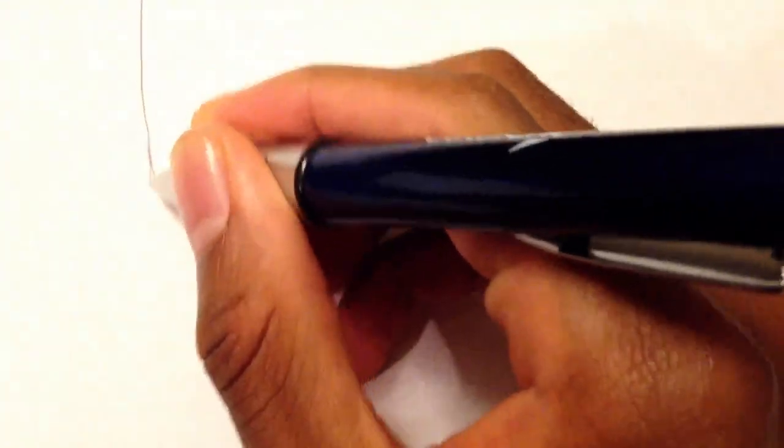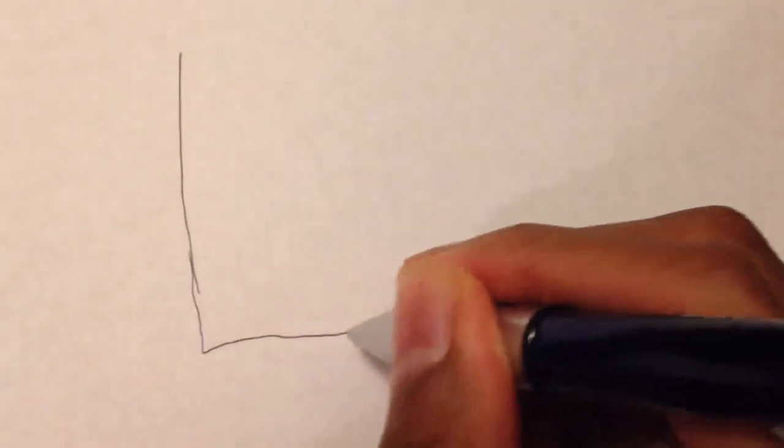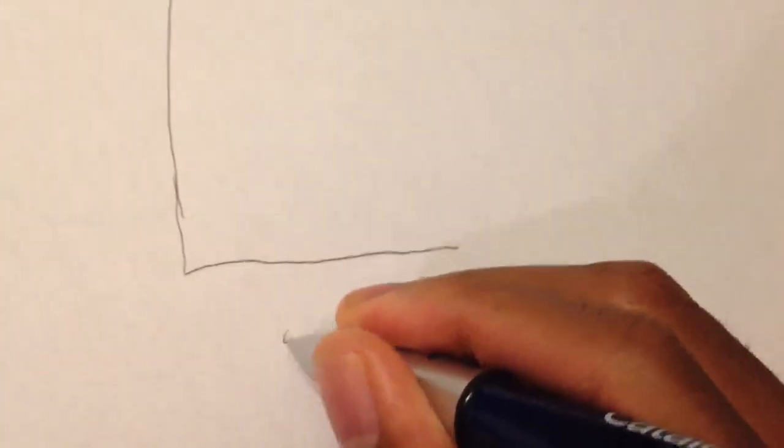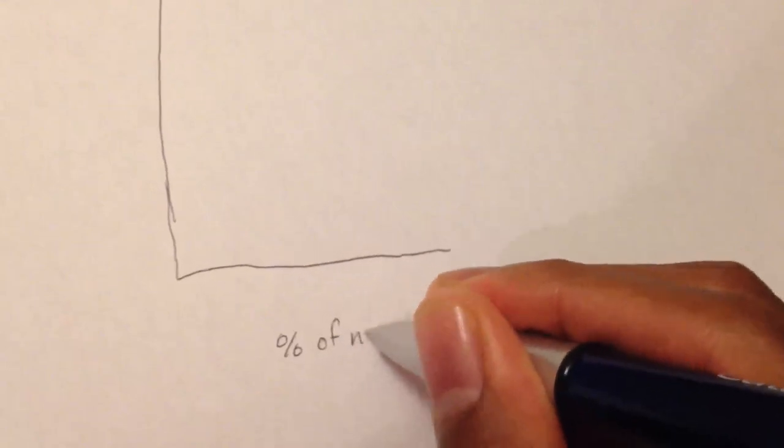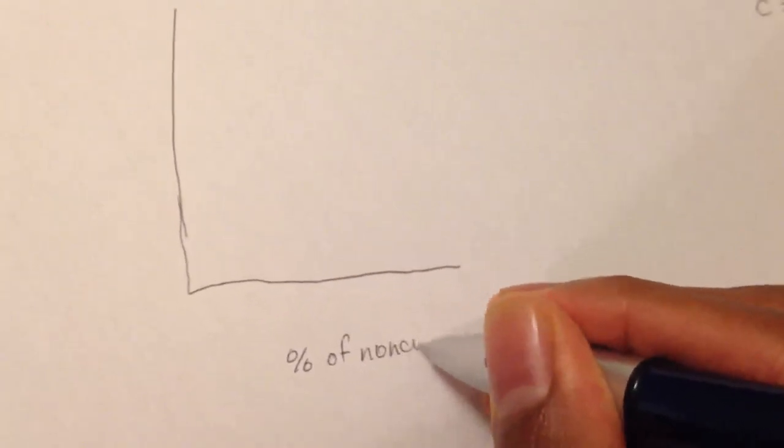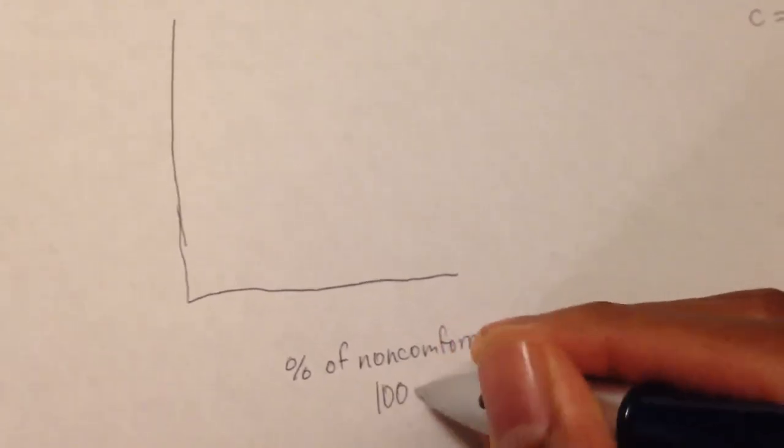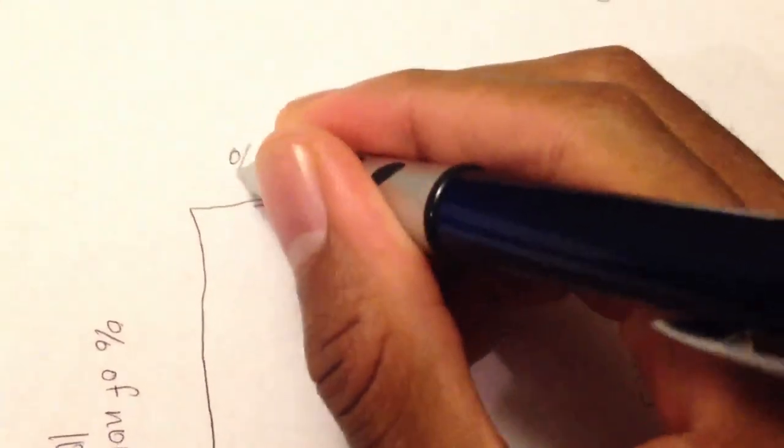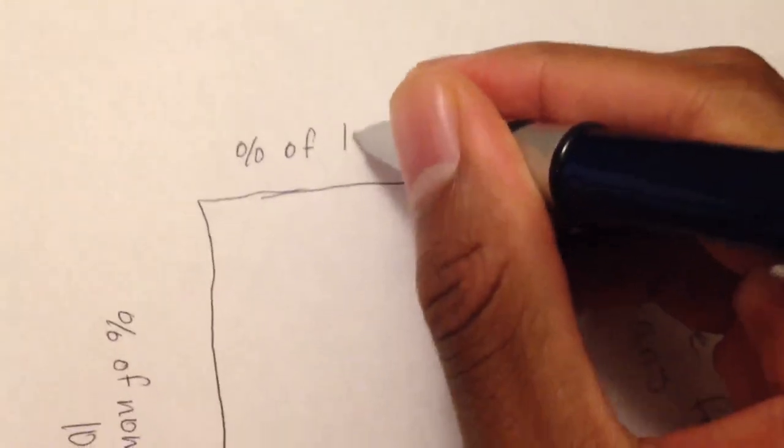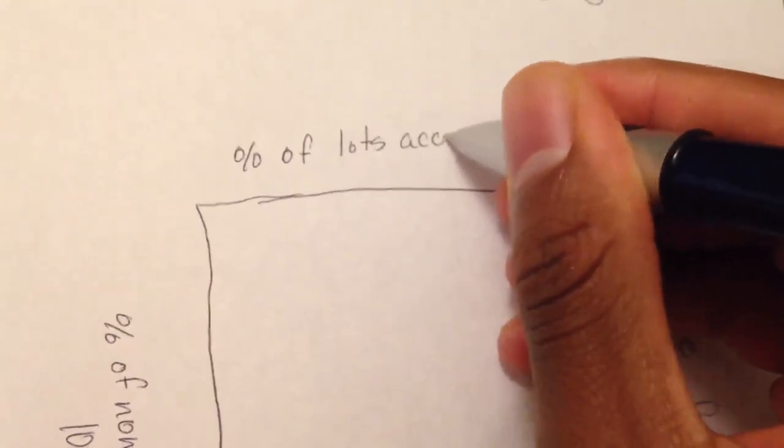Okay, since we've done that, you want to start off with a graph, simple graph. Sorry I am not an artist. This is your percentage of non-conforming as I said. This right here is your, turn the paper over, percentage of lots accepted.